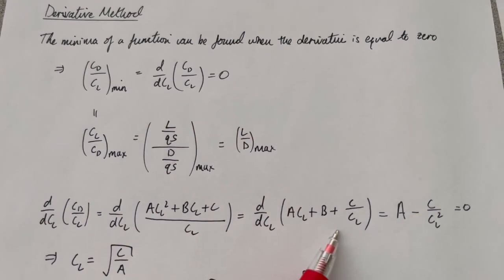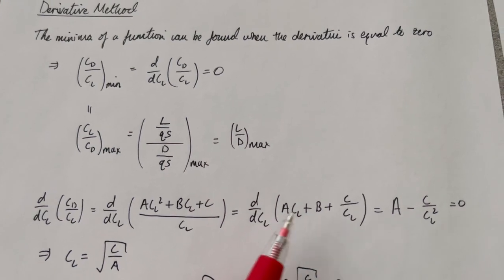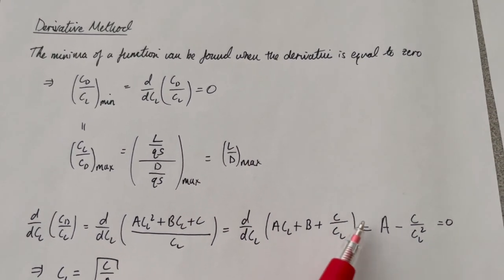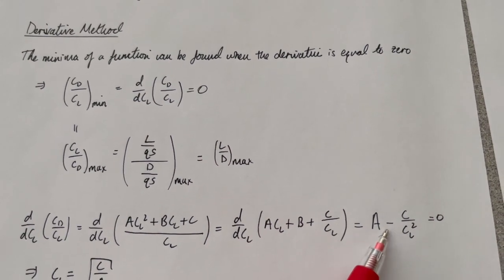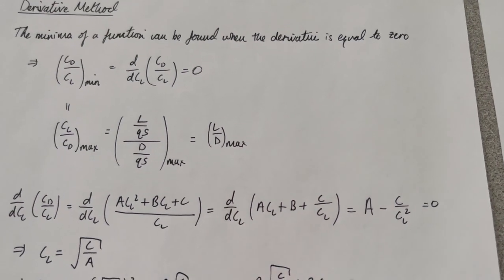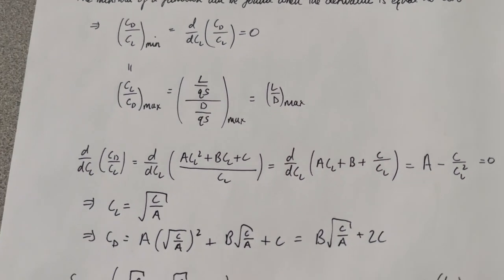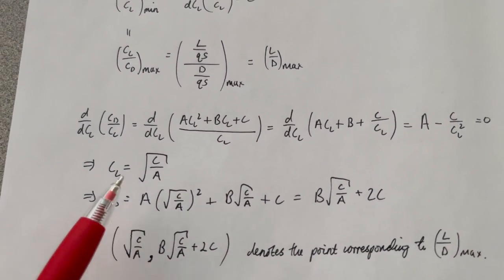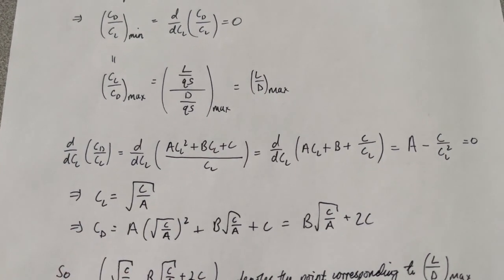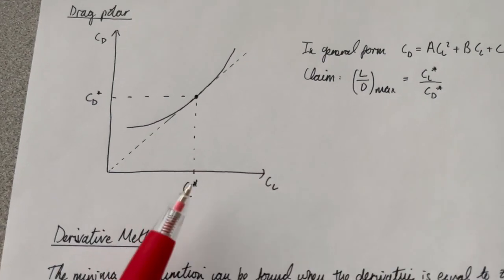The derivative of CD/CL with respect to CL is just A — the constant term B disappears — minus C/CL². Setting that equal to zero and solving for CL gives CL* equals the square root of C/A. When CL equals the square root of C/A, that gives the point corresponding to the maximum lift-to-drag ratio.